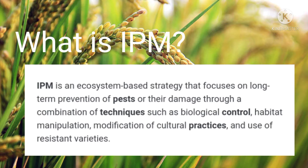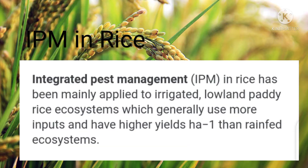In the Philippines, IPM became the official cost-reducing technology for pest control in rice in May 1986. IPM in rice has been mainly applied to the irrigated lowland paddy rice ecosystem, which generally uses more inputs and has higher yields than rain-fed ecosystems.